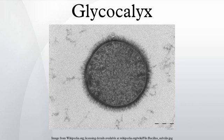The glycocalyx plays a major role in regulation of endothelial vascular tissue, including the modulation of red blood cell volume in capillaries. The slime on the outside of a fish is an example of glycocalyx. The term was initially applied to the polysaccharide matrix coating epithelial cells, but its functions have been discovered to go well beyond that.